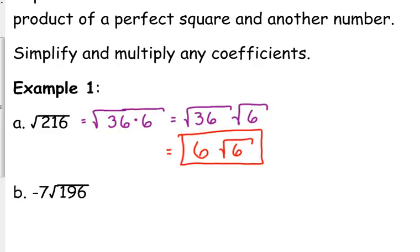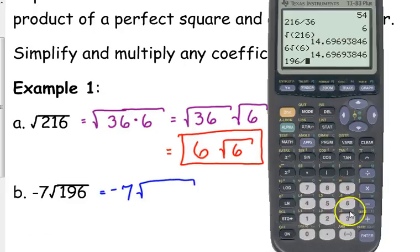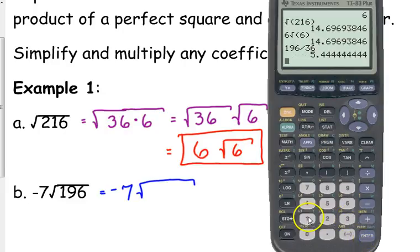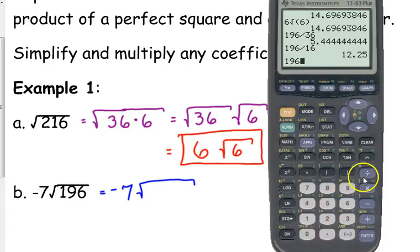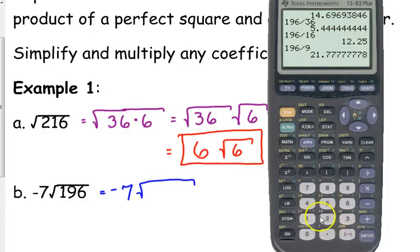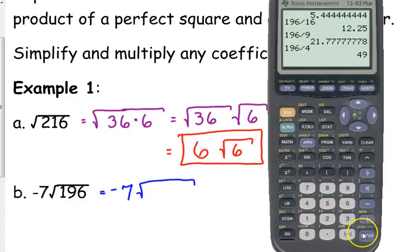For example, we have something like -7√196. We're going to leave the negative 7 hanging out there for a little while while we deal with 196. Let's see here, is 196 divisible by 36? It is not. How about we try 16? Nope. 9? Nope. 4? Oh wait, 196 is a perfect square. How do I know that? Because when I got to 4,